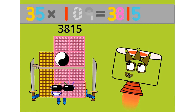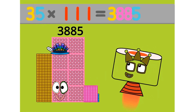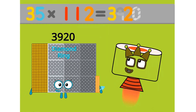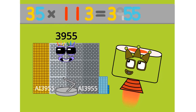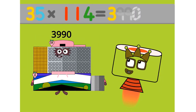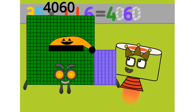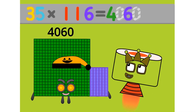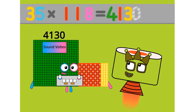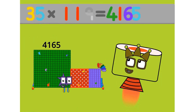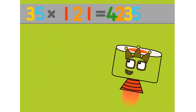35 times 109 equals 3815. 35 times 110 equals 3850. 35 times 111 equals 3885. 35 times 112 equals 3920. 35 times 113 equals 3955. 35 times 114 equals 3990. 35 times 115 equals 4025. 35 times 116 equals 4060. 35 times 117 equals 4095. 35 times 118 equals 4130. 35 times 119 equals 4165. 35 times 120 equals 4200.